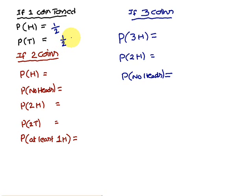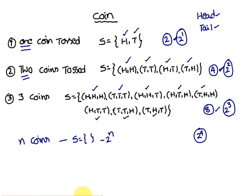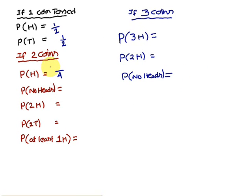If two coins are tossed, probability of getting exactly one head: the sample space has four elements. Looking at the sample space, one head occurs in two pairs — head-tail and tail-head. Therefore probability of one head is 2/4, which is 1/2.